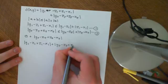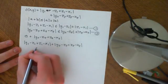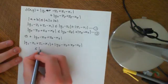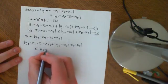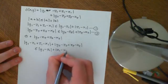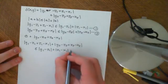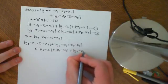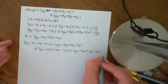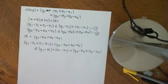Now by the ordered field properties of the real numbers, the inequality still holds that this is less than or equal to y1 minus z1 plus z1 minus x1. And then we add this thing onto this side as well, plus y2 minus z2 plus z2 minus x2.